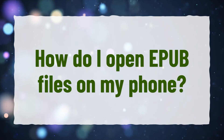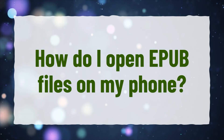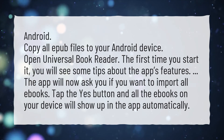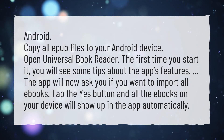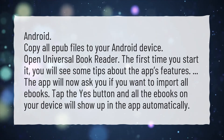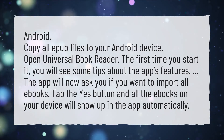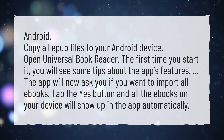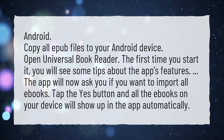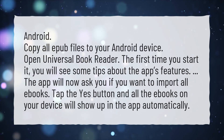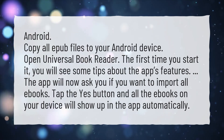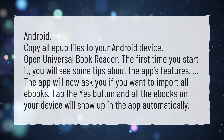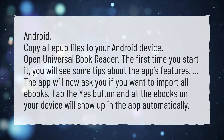How do I open EPUB files on my phone? Android: Copy all EPUB files to your Android device. Open Universal Book Reader. The first time you start it, you will see some tips about the app's features. The app will now ask you if you want to import all e-books. Tap the Yes button and all the e-books on your device will show up in the app automatically.